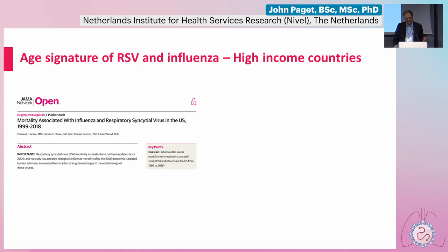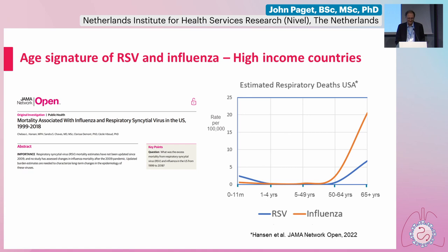What about mortality? We don't have data for Europe on RSV mortality, at least to my knowledge. A group in the US has looked at mortality over multiple years pre-COVID. The big picture is again a U-shaped distribution. Mortality for RSV is higher than for influenza in the zero-to-one age group, while in the elderly it is higher for influenza than for RSV.